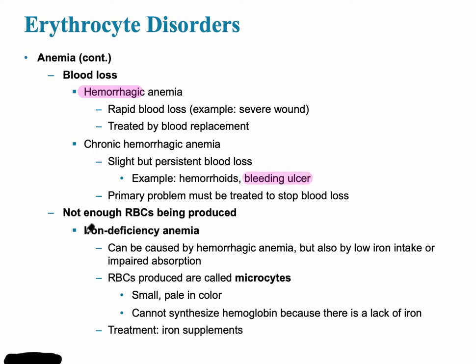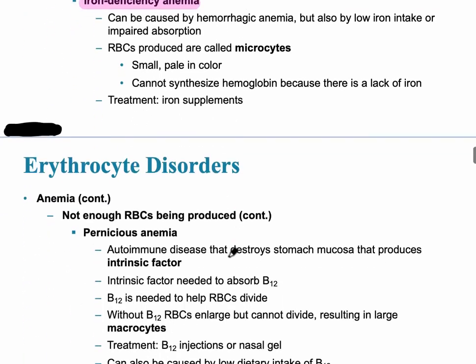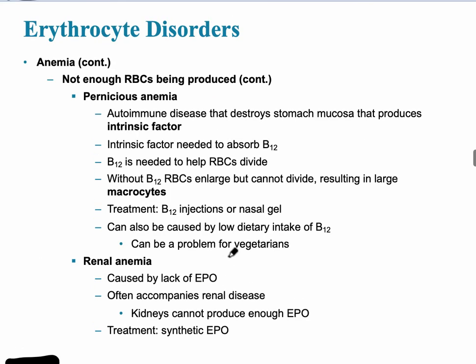Another type is iron deficiency anemia, because iron is necessary to synthesize hemoglobin. Another important type is pernicious anemia — the key here is that it involves the intrinsic factor, which is vital so that vitamin B12 can be absorbed from the diet.